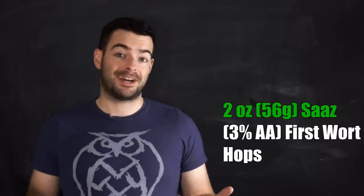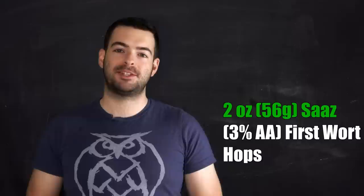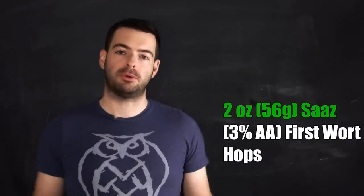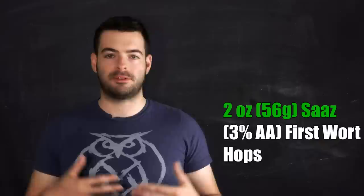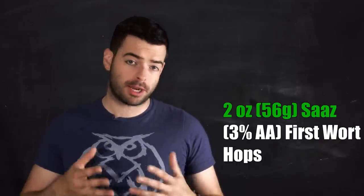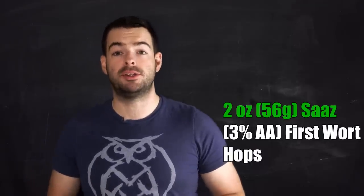And that results in a little bit different of an extraction of bitterness. For some sort of unknown reason, supposedly first wort hopping is a little bit less aggressive of a bitterness than a straight up 60-minute bittering addition. As for me, also like the decoction mashing, I've had varying results. Sometimes it has been a little extra bitter and sometimes it has been a little more nuanced and smooth. And I think that has a lot to do probably with the type of hop that you're using. Many Czech or Bohemian Pils recipes out there really actually do recommend first wort hopping a lot of the time.